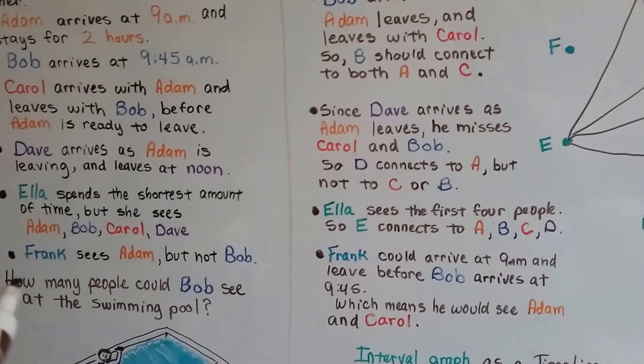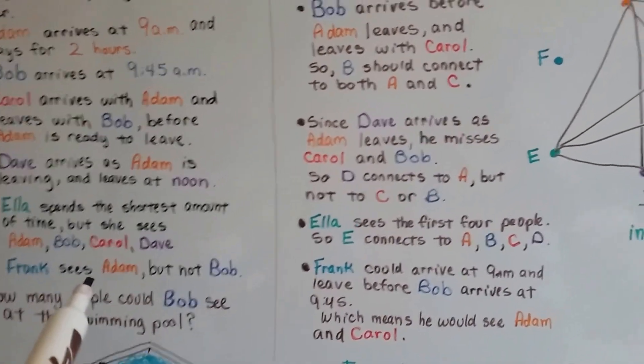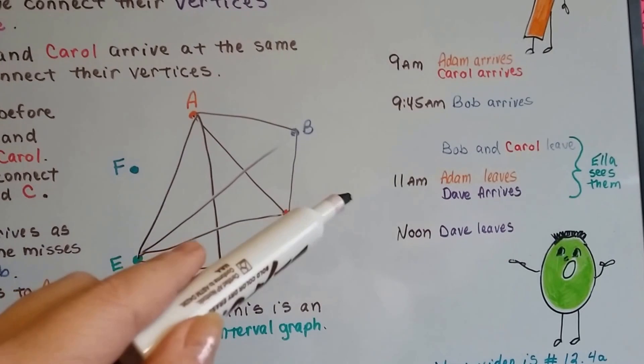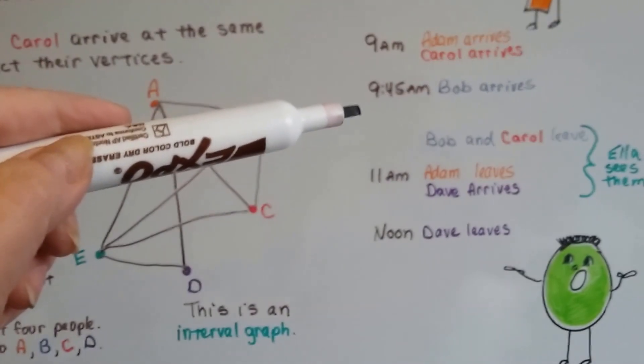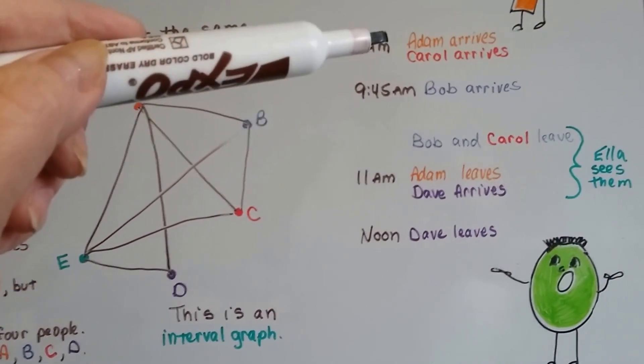Frank sees Adam but not Bob. If we look at a time for Frank to see Adam but not Bob...